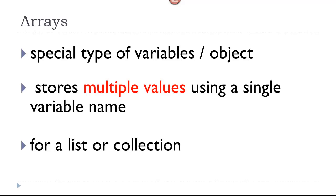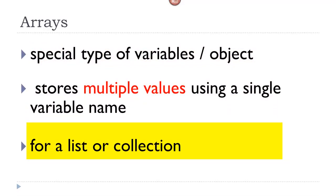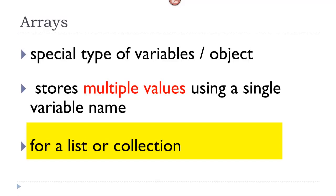In this class, we will learn about arrays. An array is a special type of variable, or technically an object. It stores multiple values using a single variable name. You would use an array for a list or collection of items, rather than using individual variable names.